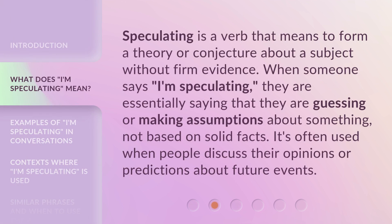Speculating is a verb that means to form a theory or conjecture about a subject without firm evidence. When someone says 'I'm speculating,' they are essentially saying that they are guessing or making assumptions about something, not based on solid facts. It's often used when people discuss their opinions or predictions about future events.